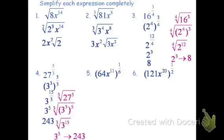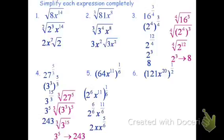For the next one, I simplify 64 into exponent form: 64 is 2 to the 6th. Raising 2 to the 6th to the 1 sixth gives 2 to the 6 sixths, which is just 2. x to the 11th raised to the 1 sixth gives x to the 11 sixths — 6 goes into 11 once with 5 left over, so that's x times x to the 5 sixths. Using radicals: the 6th root of 2 to the 6th times x to the 11th — the 6 goes into 6 once giving a 2, and 6 goes into 11 once with 5 left over, so it's 2x times the 6th root of x to the 5th.